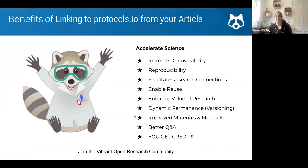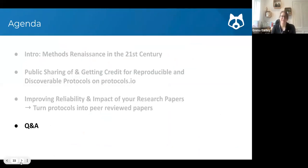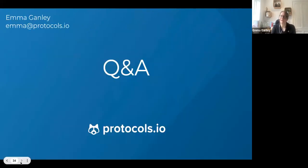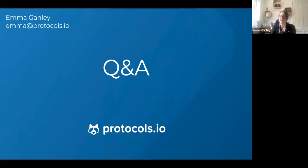There are many benefits of using protocols.io for publishing and linking methods to research articles. A key one is that you can get credit — the author lists for method papers might be very different from the research article author list, meaning people who worked on the methods can actually get credit for the methods they develop. With that, I'll move on to Q&A. Feel free to add questions to the Q&A or chat box, and if you have follow-up questions later, feel free to email me.